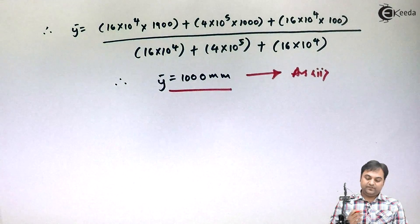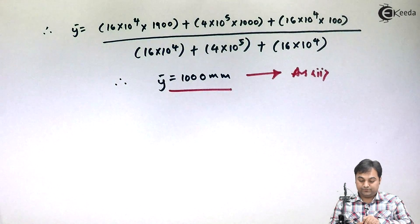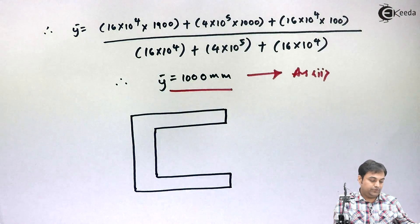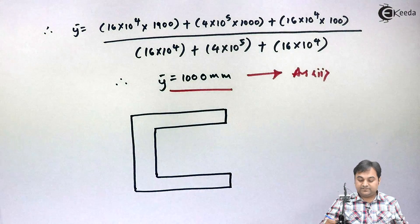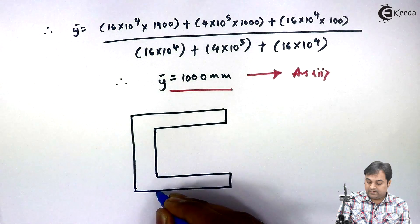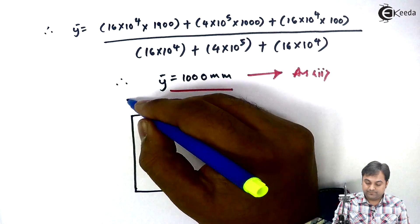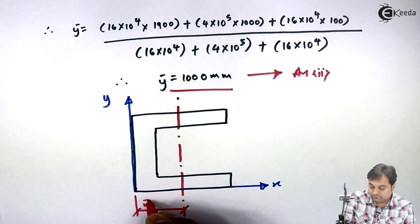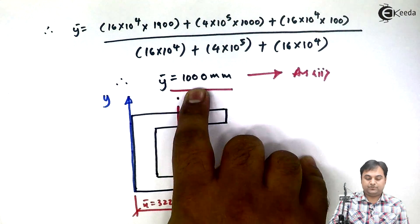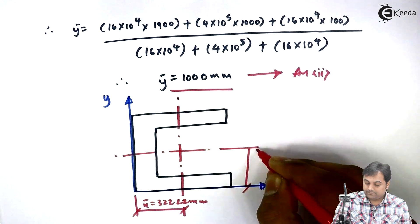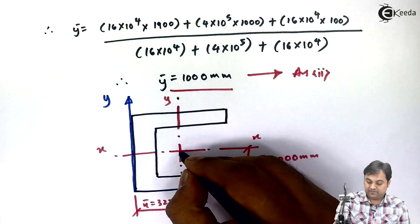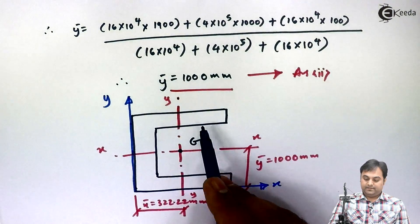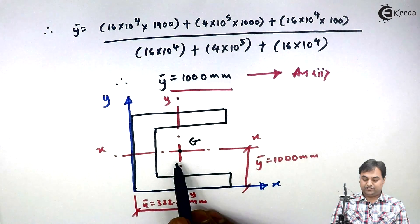Once we have x bar and y bar, we can mark the centroid on the diagram. Placing the C-section on the x-y coordinate system, x bar is 322.22 mm from the y-axis and y bar is 1000 mm from the x-axis, which is exactly at half the total height. The intersection of these two distances gives the centroid, and thus we have completed the location of the centroid for the C-section.